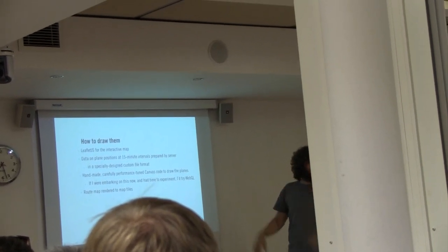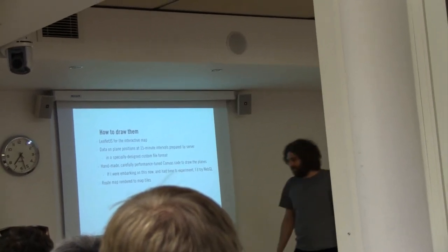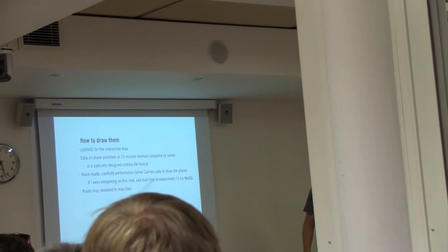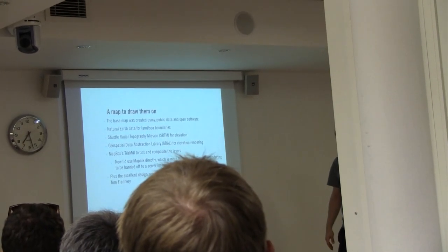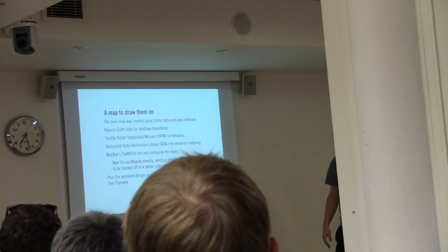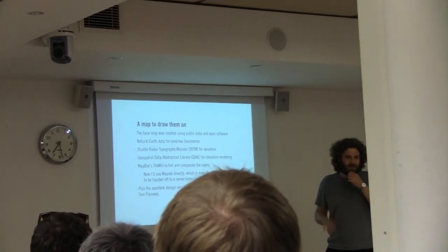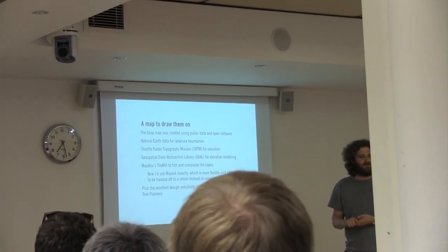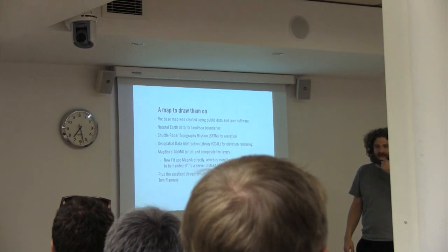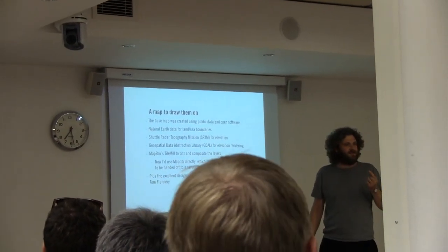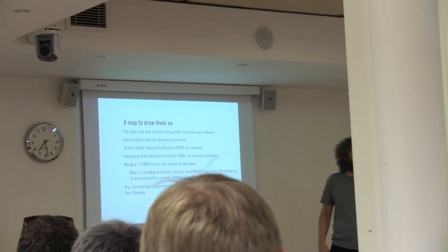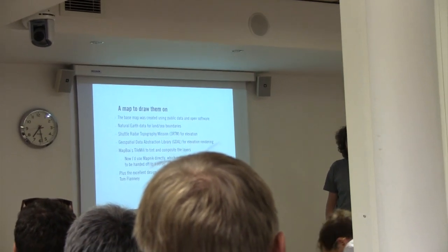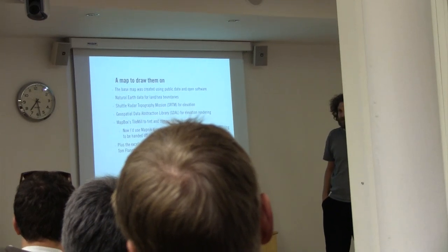It's then drawn using 2D canvas in a really brutally optimized way to make it work as well as it does — which is not always brilliantly well. The map that it's drawn on is a tiled map rendered using Leaflet. We used SRTM elevation data to create the textured hill shading, and then we used TileMill for this project to pull it all together.